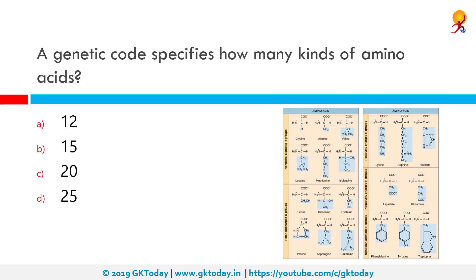A genetic code specifies how many kinds of amino acids? The correct answer is 20. There are as many as 100,000 kinds of proteins that constitute the body, and these comprise only 20 kinds of amino acids in various combinations. These 20 different kinds of amino acids combine in different combinations to form thousands of different proteins.